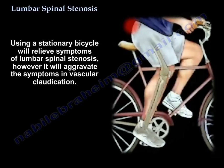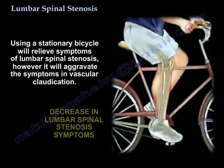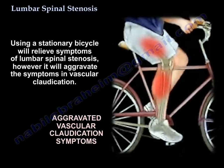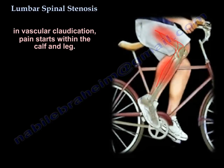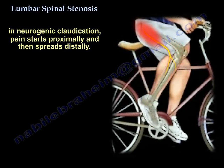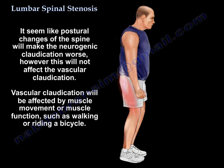The bicycle test helps differentiate: riding a bicycle will relieve symptoms for lumbar stenosis and will aggravate the condition for vascular claudication. In vascular claudication, the pain starts in the calf and leg. In neurogenic claudication, the pain starts proximally and spreads distally. Postural changes of the spine make neurogenic claudication worse but will not affect vascular claudication.